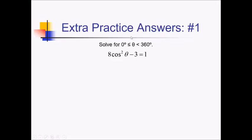To start this problem off, we're going to try to isolate the trig expression here, cosine. We have to first isolate cosine squared, so we can do that by adding 3 and dividing by 8. So 1 plus 3 is 4, divided by 8 — we can reduce 4 over 8 to 1 half.